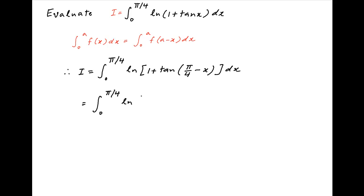tan of π/4 minus x equals tan π/4 minus tan x divided by 1 plus tan π/4 times tan x.